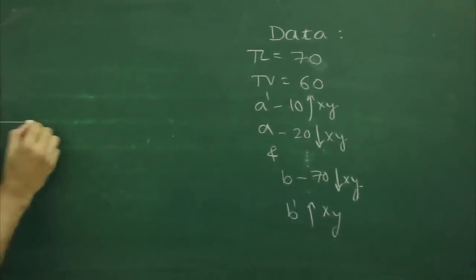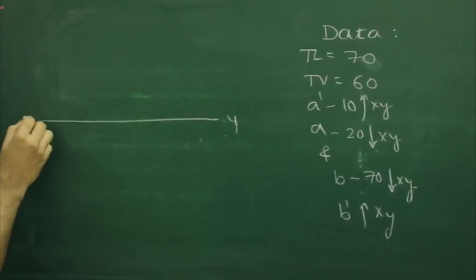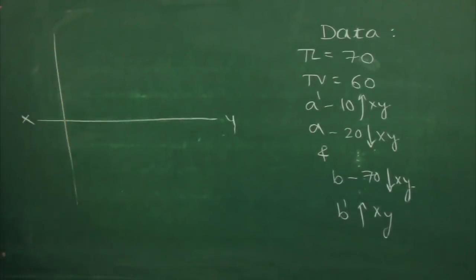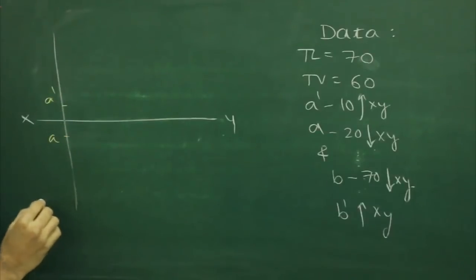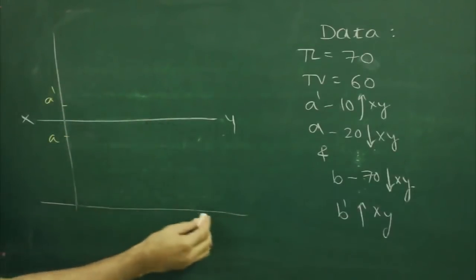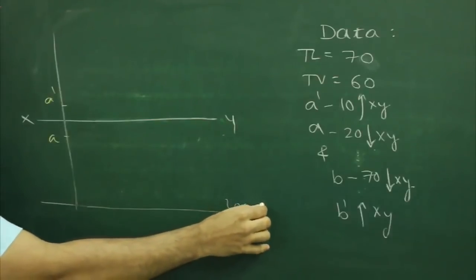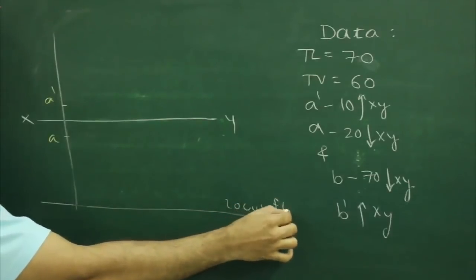Now first we will draw xy plane, will mark point A, then the given B which is 70mm down, so we will go down by 70, then we will draw the locus of B.